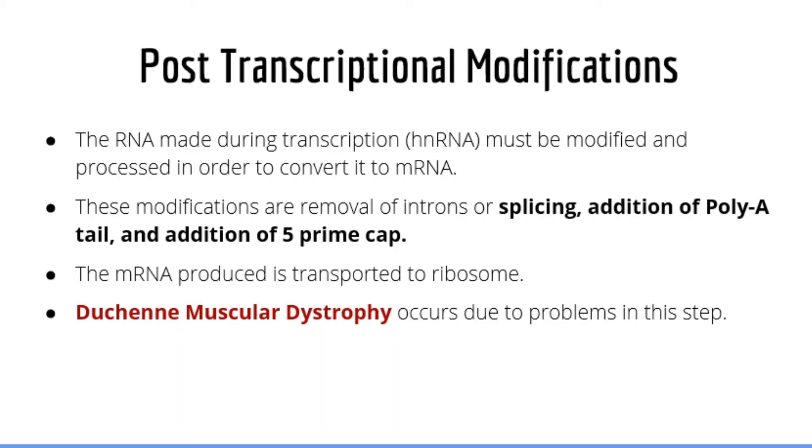These modifications include addition of a poly-A tail, addition of a 5' cap, as well as removal of introns. Once this has occurred, mature mRNA is able to leave the nucleus and be transported into a ribosome for translation, which is the process of using mature mRNA to make a protein.